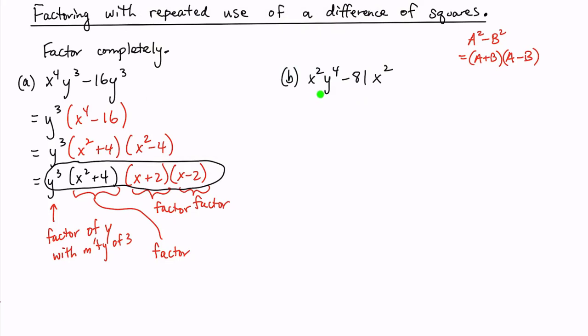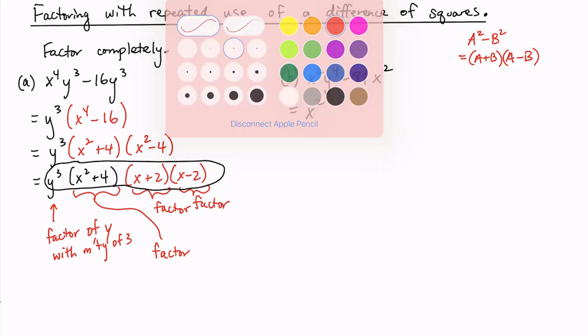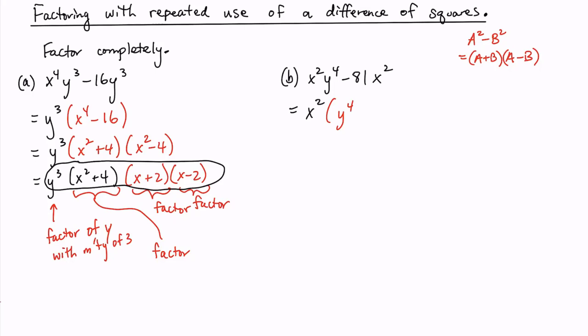What is the greatest common factor from x squared times y to the fourth and negative 81 x squared? Well, it's x squared. So let's take out the GCF and use the distributive property again. What do we have left? We have y to the fourth minus 81.